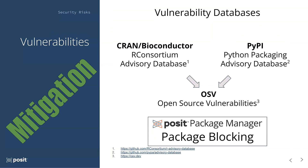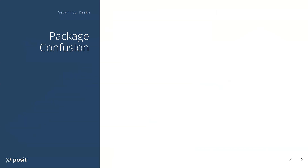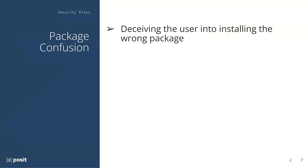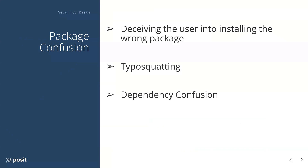Now, separate from the security risks in the packages themselves, there are a couple more malicious risks that prey on weaknesses in the infrastructure used to distribute packages. We group these into a category called package confusion, which in simplest terms is all about deceiving the user into installing the wrong package — instead of getting the package they want, they're tricked into installing a malicious package. The two risks we'll talk about today are typosquatting and dependency confusion, which are some of the more common and most high-profile ones we've seen in the last year.